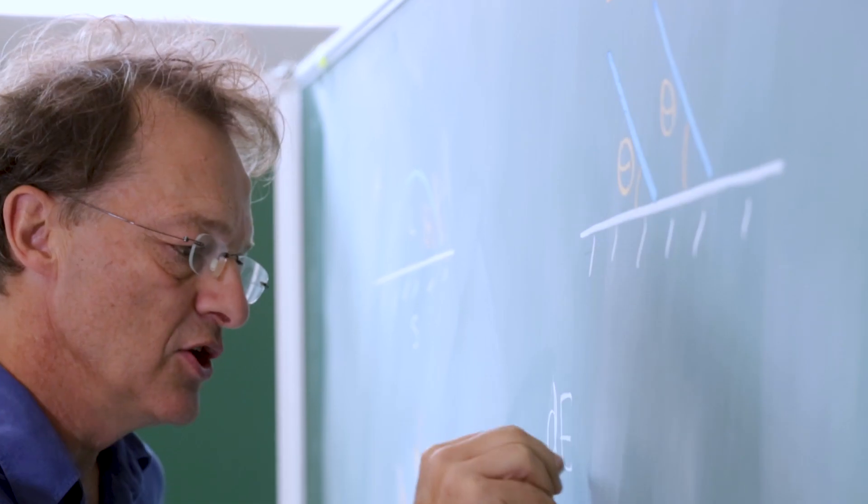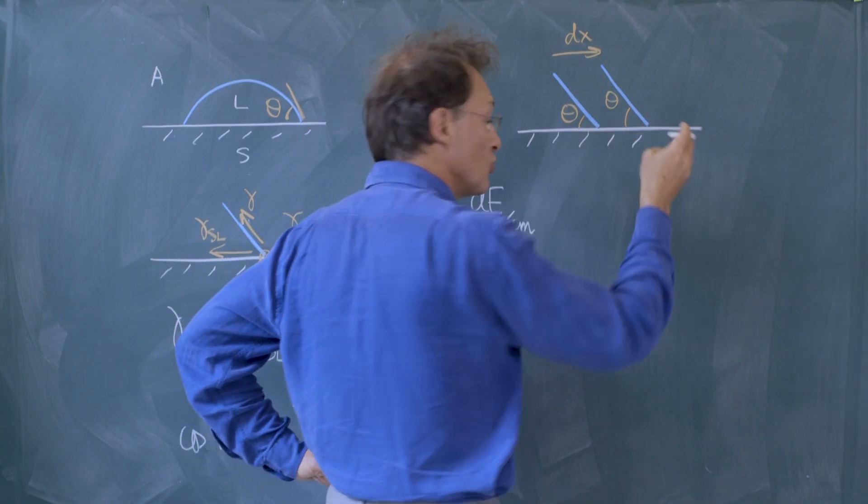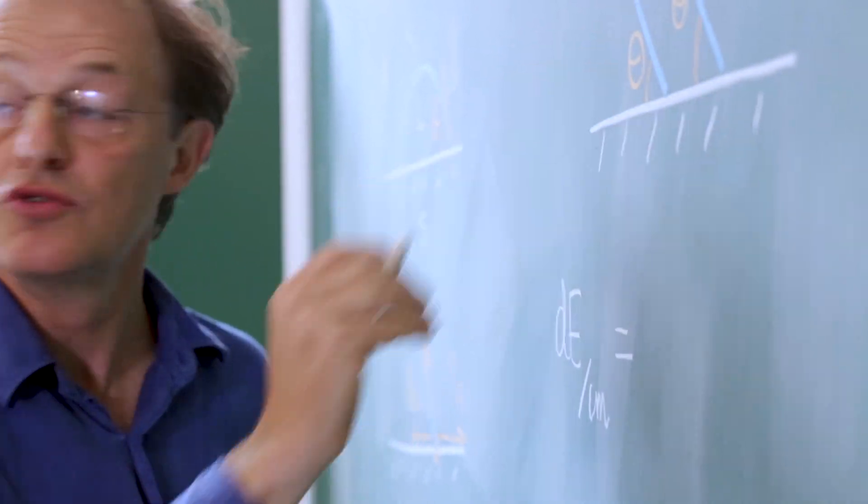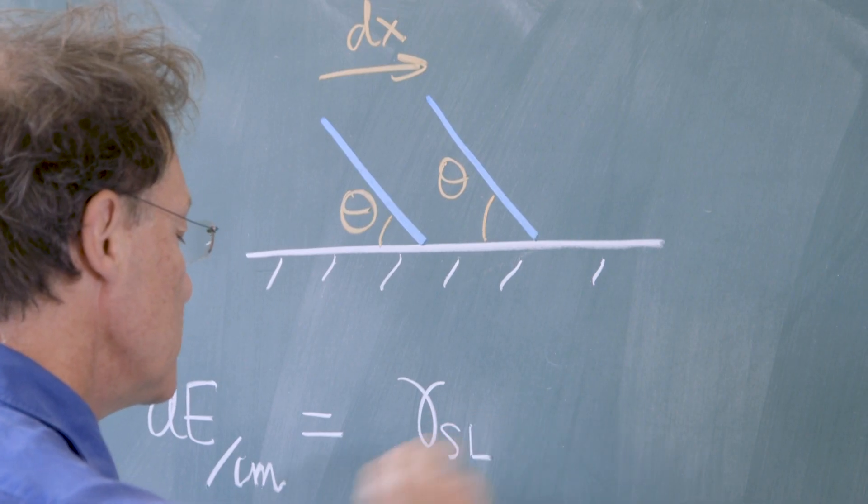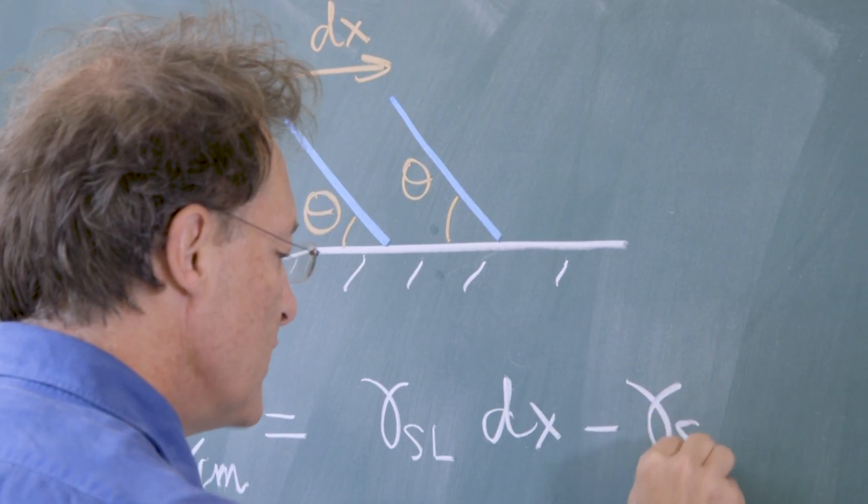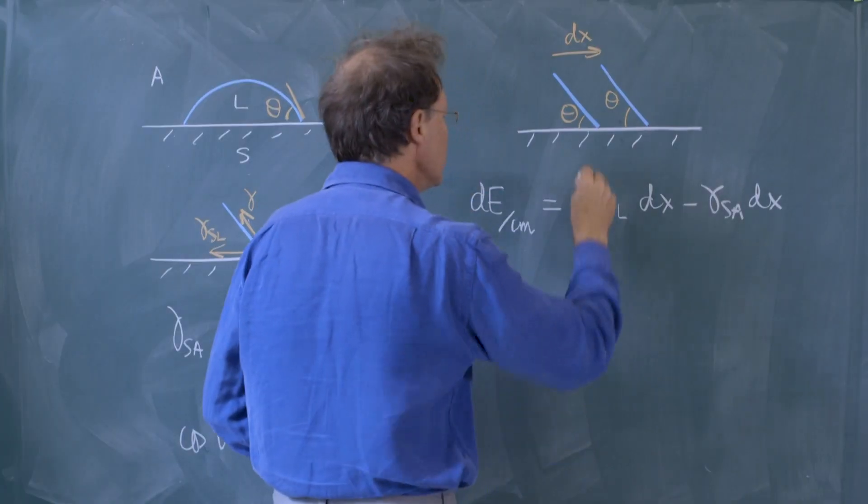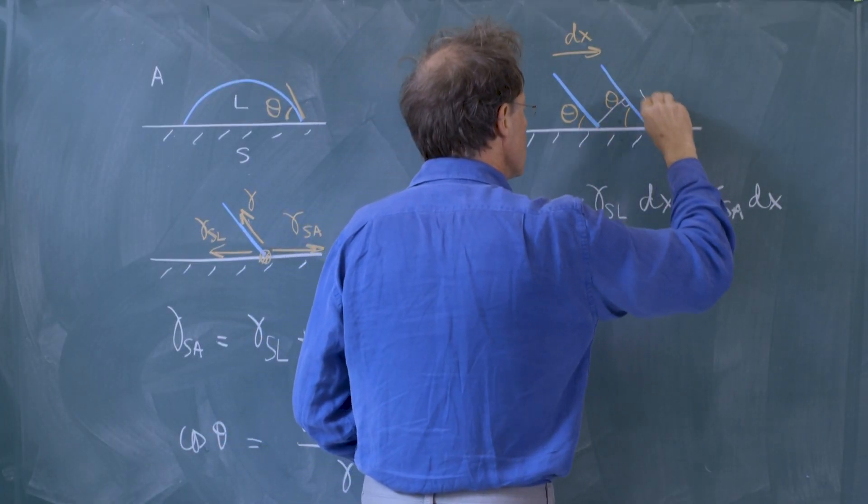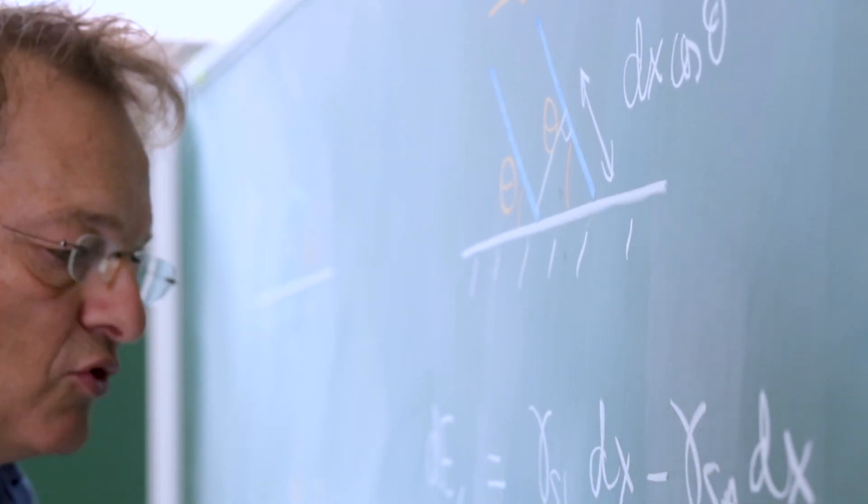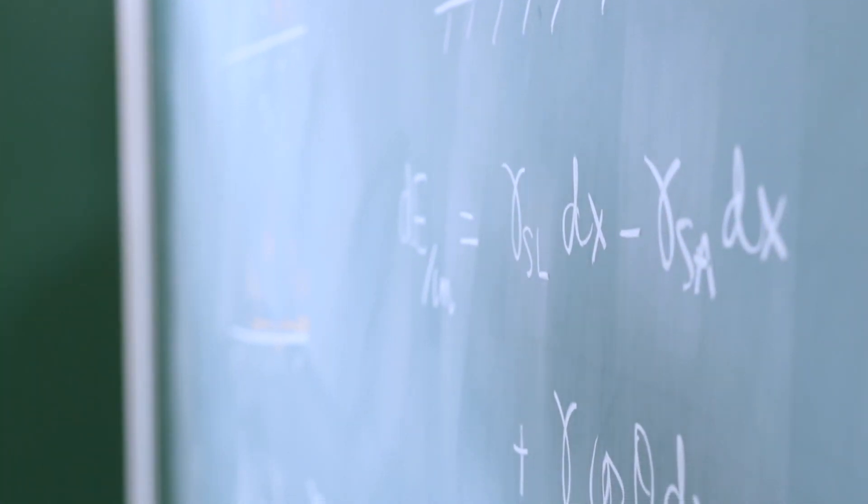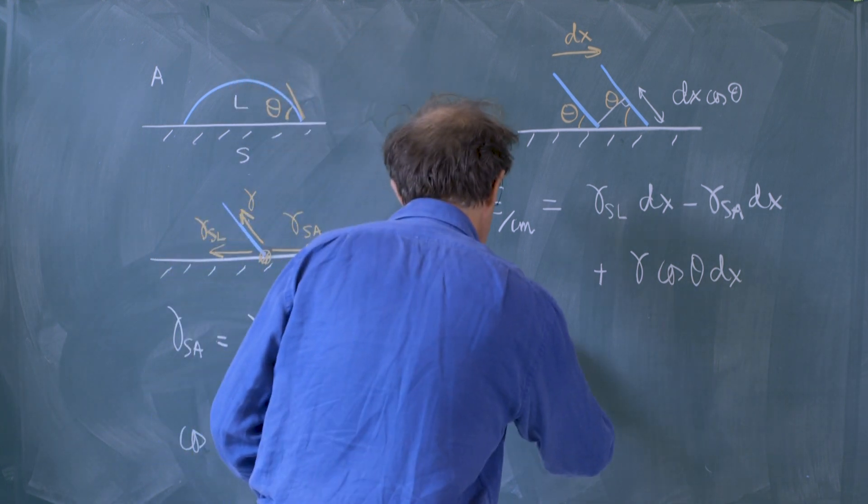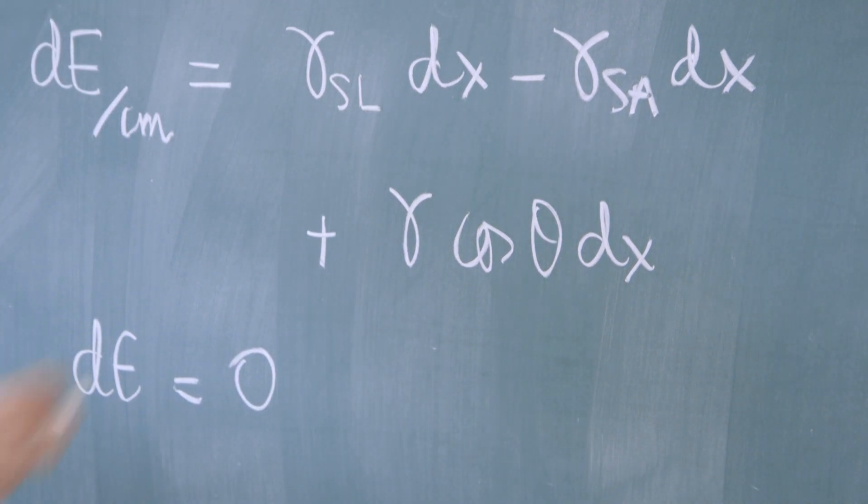We can look at the variation of surface energy when this little jump is made. The variation of surface energy per unit length in the contact line can be written as follows. Firstly, we created a new surface between solid and liquid, so we have a contribution which is gamma SL times dx. Secondly, we suppressed the corresponding surface area in the solid-air interface. Finally, we increased a little bit the surface area between liquid and air by a quantity which is dx cosine theta. At equilibrium, we must be in a well of energy, and as a consequence, dE must be zero. If dE is zero in this relationship, immediately we recover the contact angle which was derived by Young's argument.